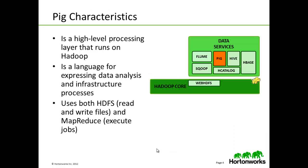PIG is a data flow language for expressing data analysis and infrastructure processes. PIG is translated into a series of MapReduce jobs that are run by the Hadoop cluster. PIG is extensible through user-defined functions that can be written in Java and other languages. PIG scripts provide a high-level language to create the MapReduce jobs needed to process data in a Hadoop cluster.